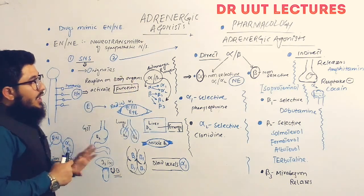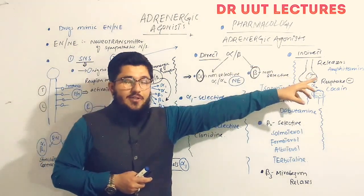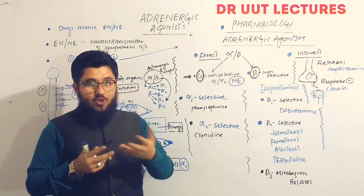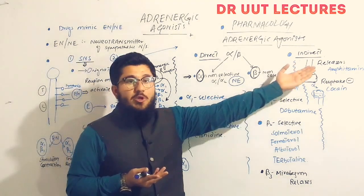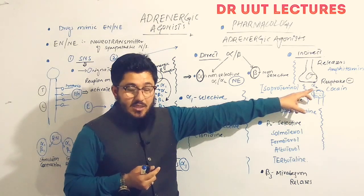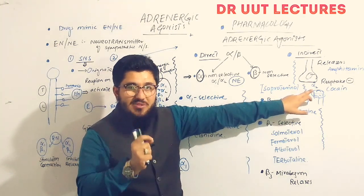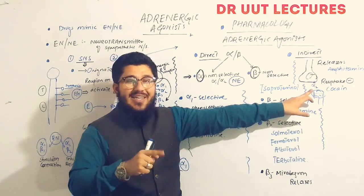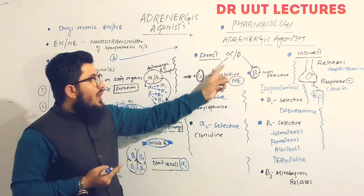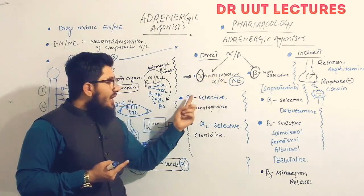The pharmacology of adrenergic agonists includes two groups: direct acting and indirect acting. Direct acting drugs act directly on the receptors — they stimulate the receptors, which then show a specific action. Indirect acting drugs cause an increase in the concentration of neurotransmitter in the synaptic cleft between the pre- and post-synaptic neuron. Direct acting alpha agonists are further divided into three: alpha non-selective, alpha-1 selective, and alpha-2 selective.